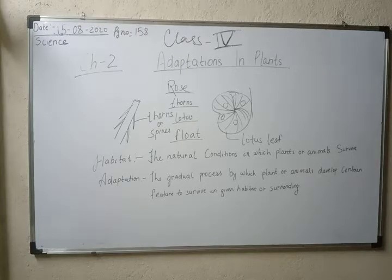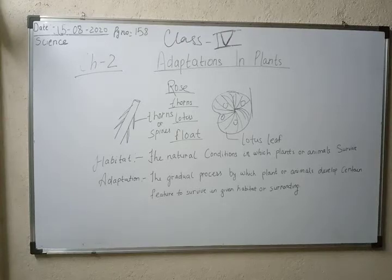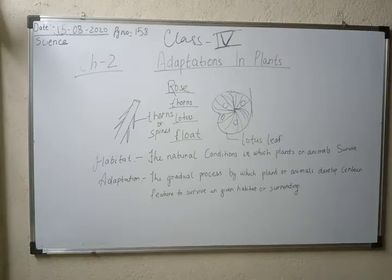How do plants survive in those areas? We people are living at a normal temperature with balanced summer, winter, and rainy seasons. But some areas of land have a very different type of temperature with no change at all — it is either extremely cold or extremely hot. How do plants in those areas survive? We will read about this in this chapter.